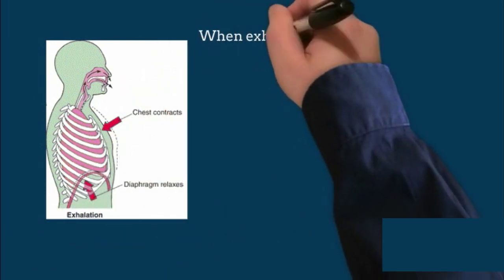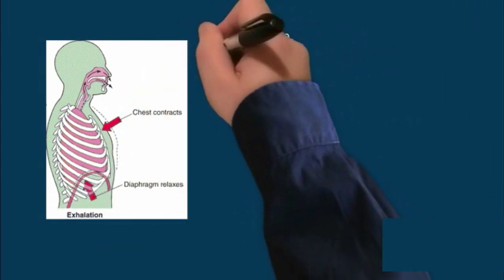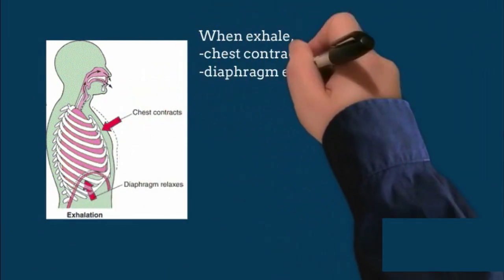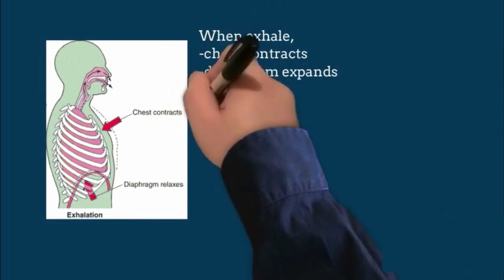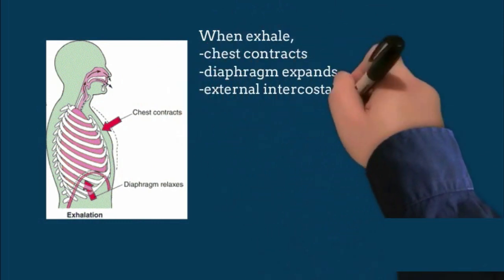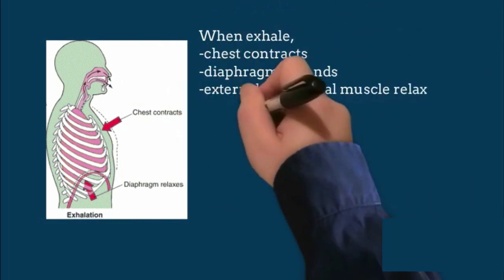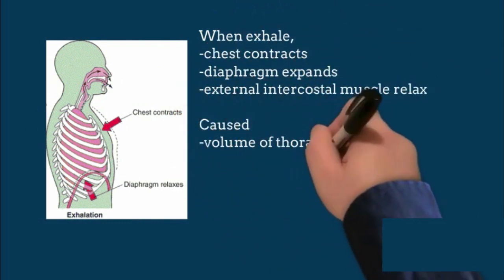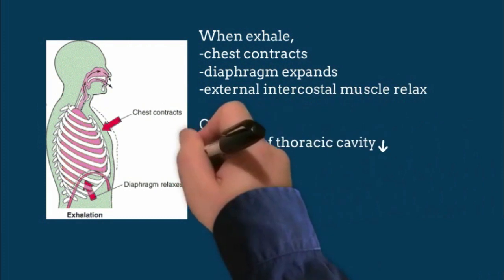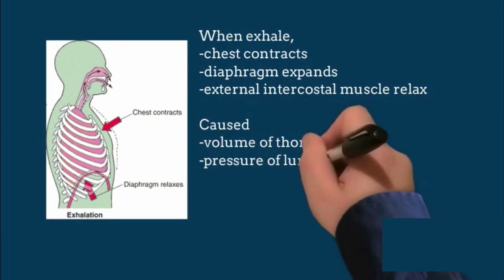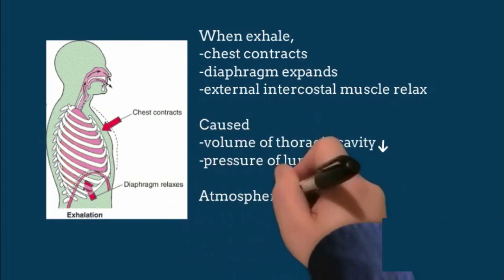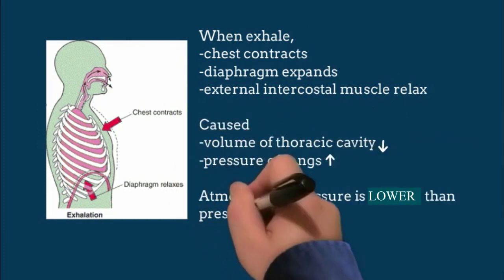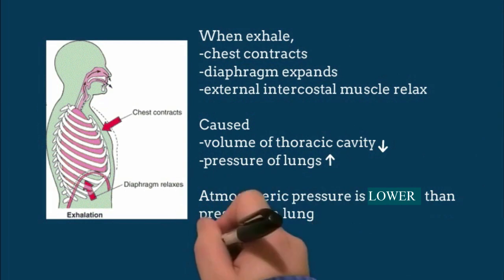When exhaling, the chest contracts and the diaphragm expands, which causes the volume of the thoracic cavity to decrease and the pressure of the lungs to increase. Since the pressure of the lungs is higher than atmospheric pressure, air flows out from the lungs.